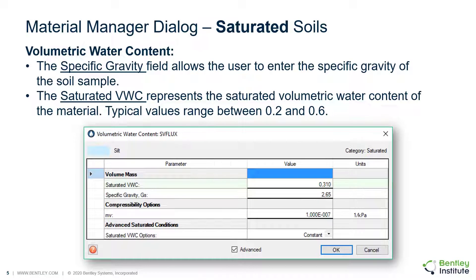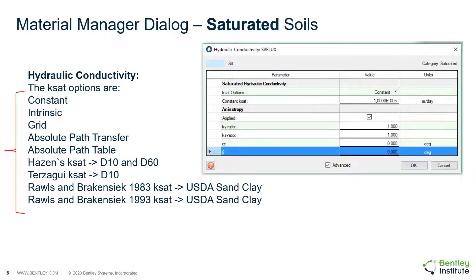User input is simplified for saturated soils, which exist only beneath the water table. The user must enter a specific gravity of the soil sample as well as a saturated volumetric water content. For a saturated soil, the user must only enter a saturated hydraulic conductivity. This parameter is specifically measured in the field or lab and entered into the software. There are also options to estimate the saturated hydraulic conductivity based on simpler grain size parameters such as D10 and D60.